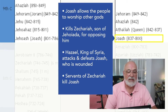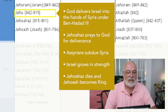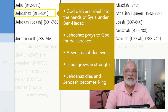Jehu of Israel dies and his son Jehoahaz becomes king. At this point, God delivers Israel into the hands of Syria under Ben-Hadad III. Jehoahaz prays for deliverance and the Assyrians subdue Syria. Without the threat of Syria, Israel grows in strength.